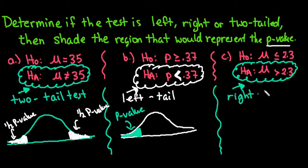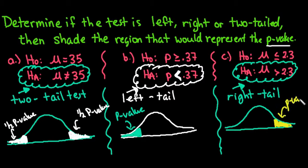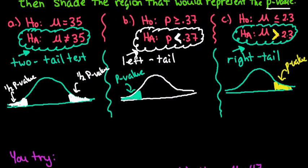This one would be a right-tailed test, which tells me that if I were to draw out my curve and shade, I would shade only the right tail. This right here would be my p-value. And again, if you're struggling with this, just treat this like an arrowhead. It's pointing to the right, so it's telling you that it's greater than—all of the values to the right are greater than.